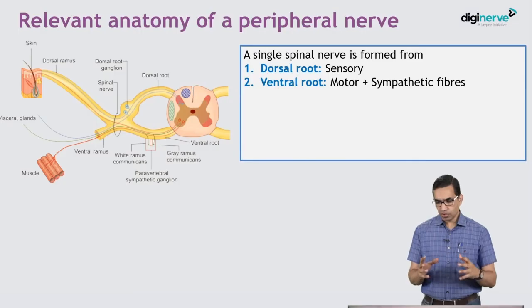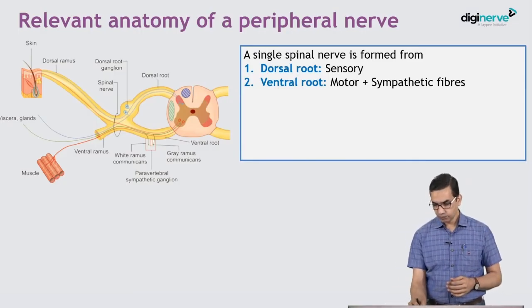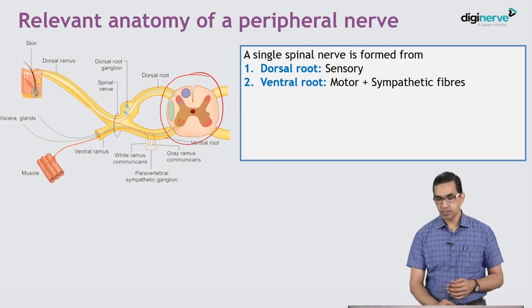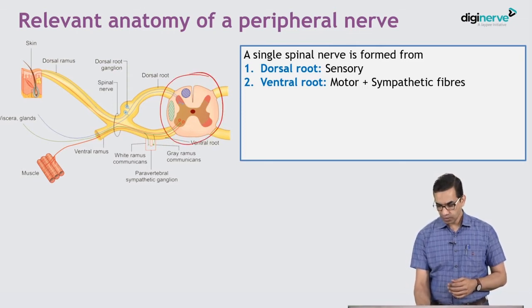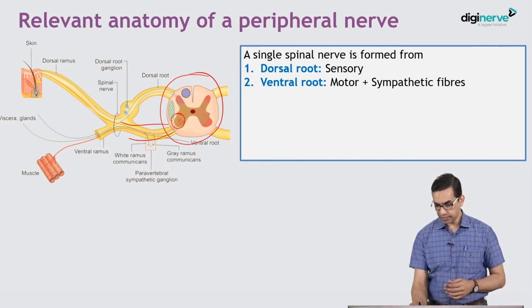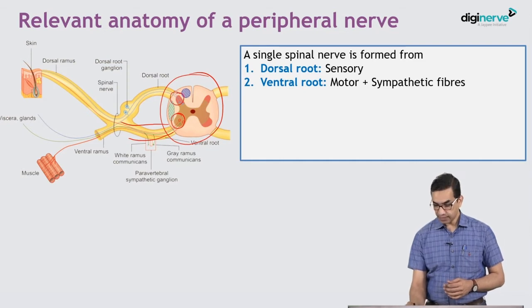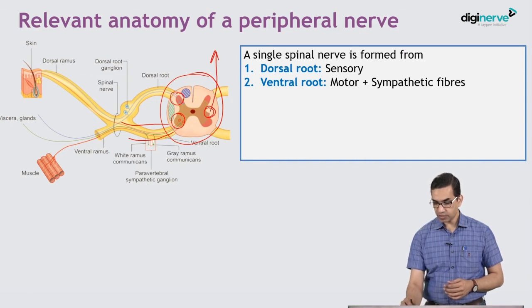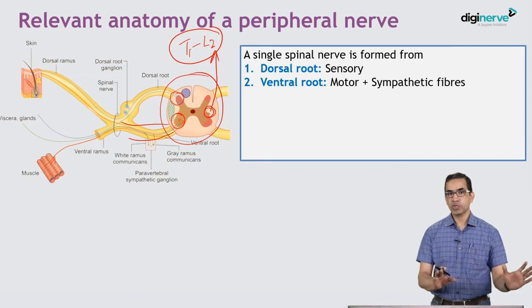Then we chalk out the plan of treatment and the factors that can affect the prognosis of a nerve injury. Now, if you look at a single peripheral nerve after it arises from the spinal cord — this is a section of the spinal cord. This is the ventral root which arises where axons have come out of the anterior horn cell. The lateral horn, especially in the thoracodorsal T1–L2, is responsible for the sympathetic outflow, though we are not going to discuss that here.